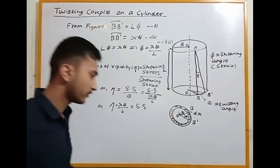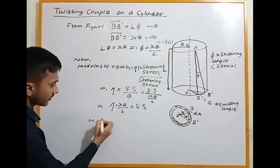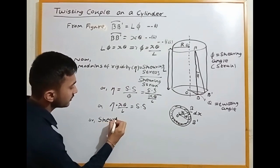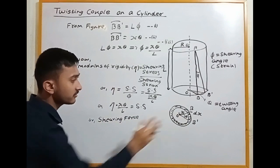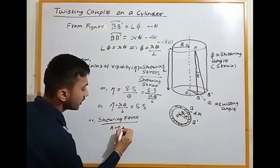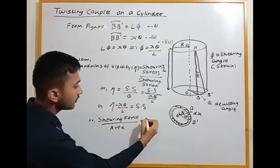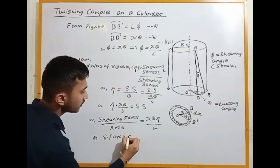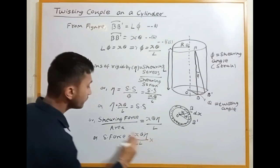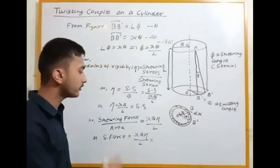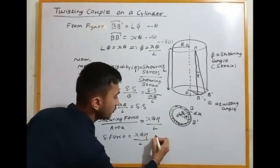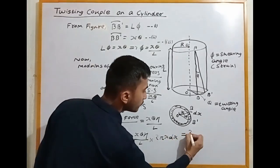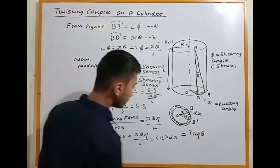Sharing stress on this face — I am sharing stress with force, and I am sharing stress with force per unit area. So sharing stress equals force on this face divided by area. This face area: sharing force equals x times theta times eta divided by L, into area. Area is the same as perimeter times thickness. Perimeter is 2 pi x, and the thickness is dx.